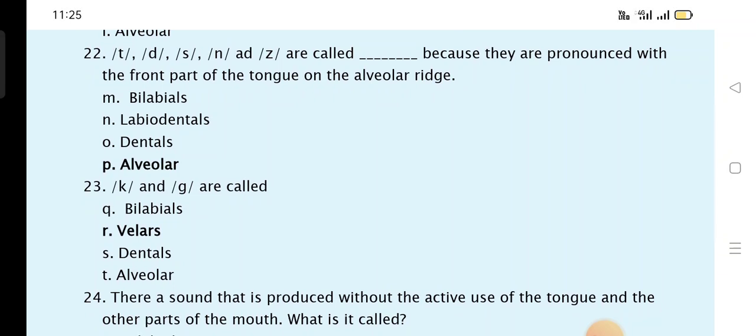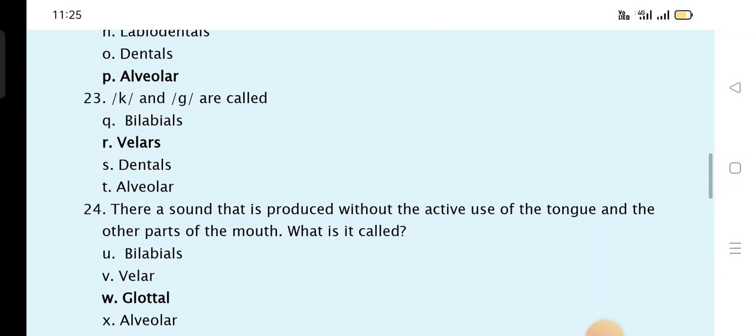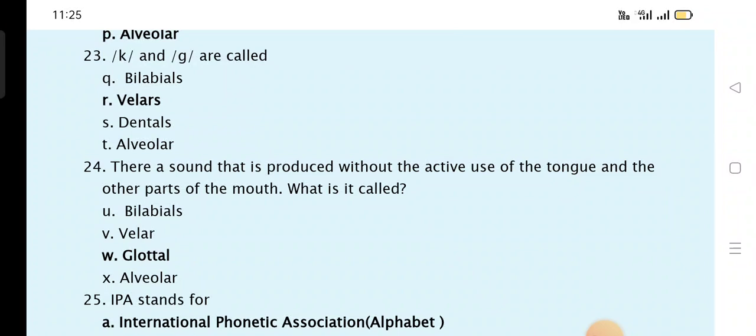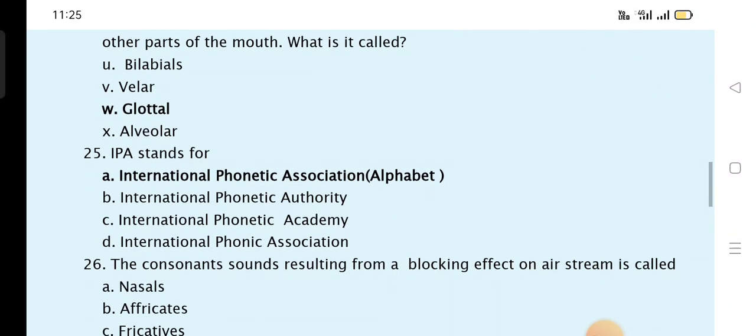K and G are called velar. There is a sound that is produced without the active use of the tongue and the other parts of the mouth. It is called glottal.